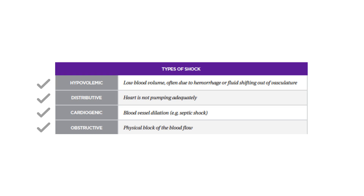Distributive shock occurs when the heart is not pumping adequately. Cardiogenic shock occurs when blood vessels are dilated, like in septic shock. Obstructive shock occurs when there is a physical blockage of the blood flow.